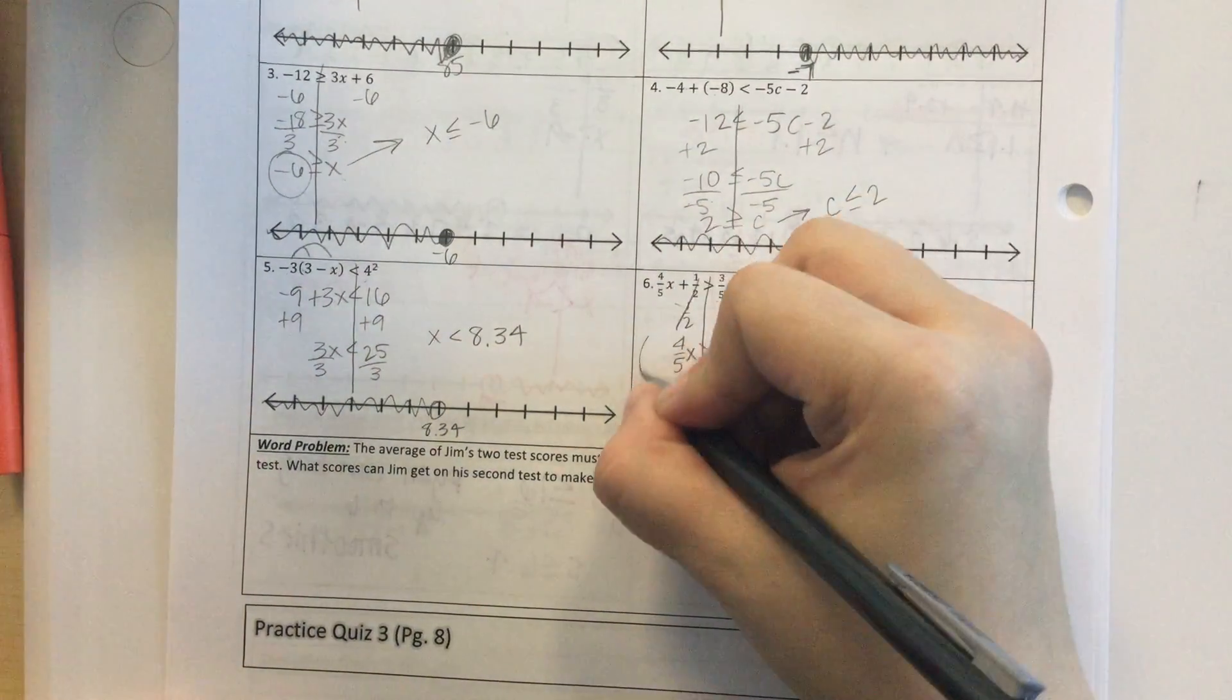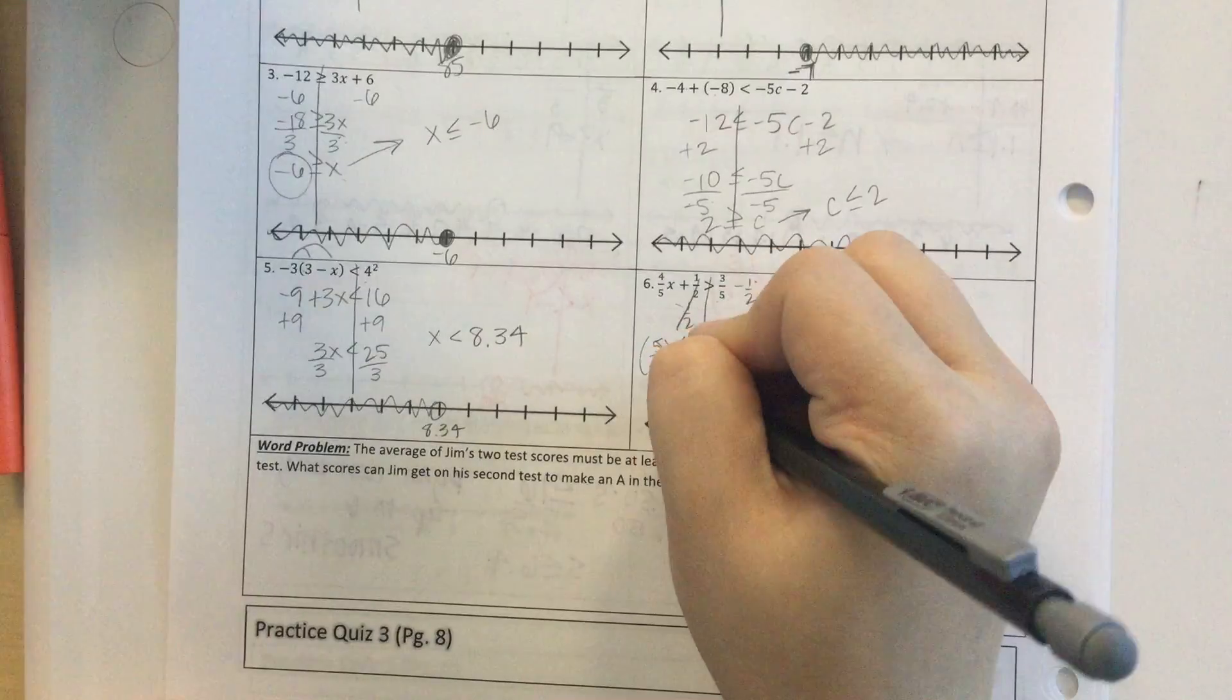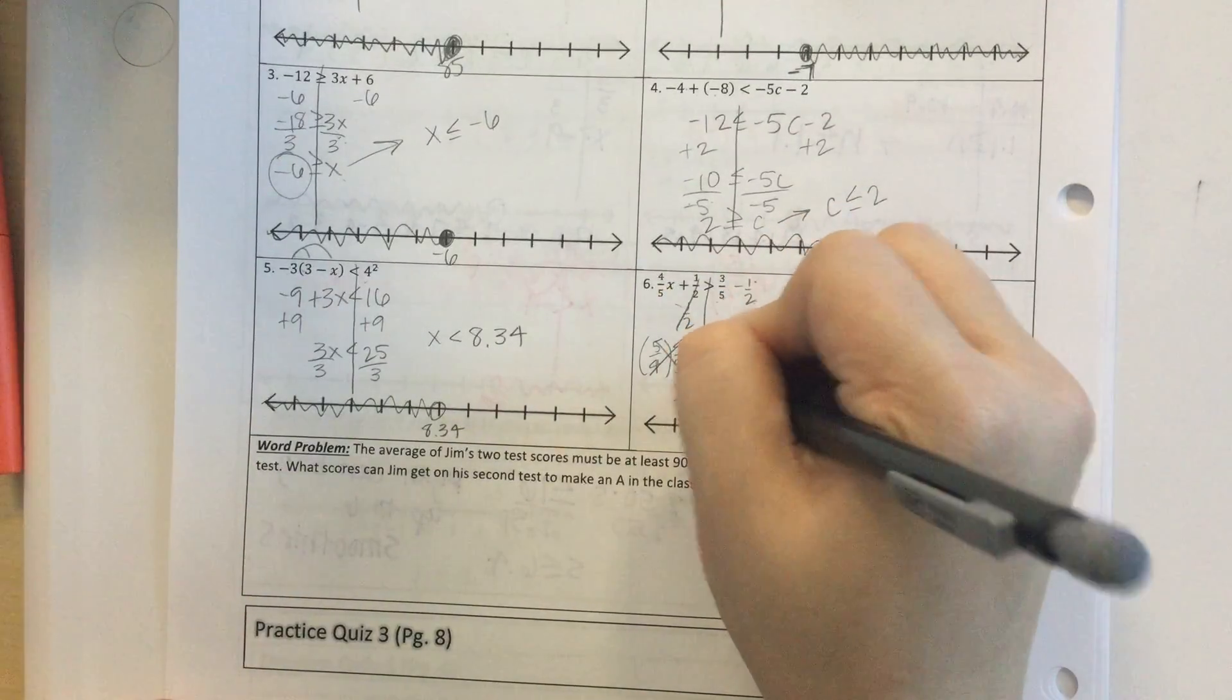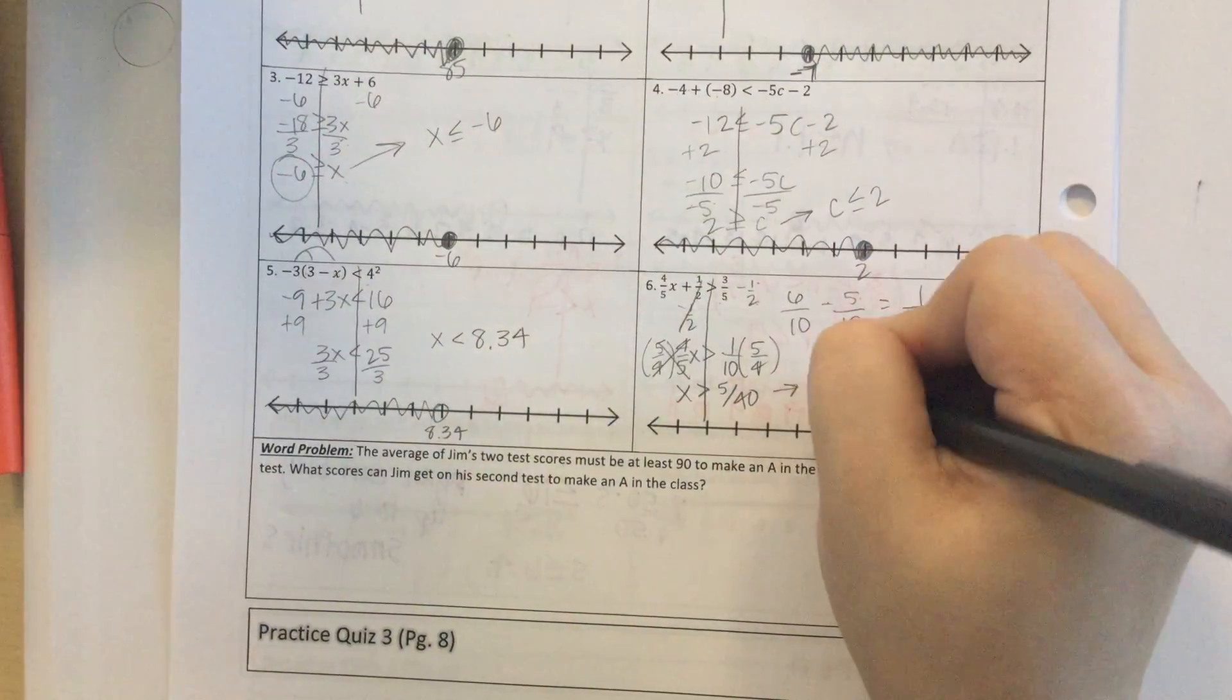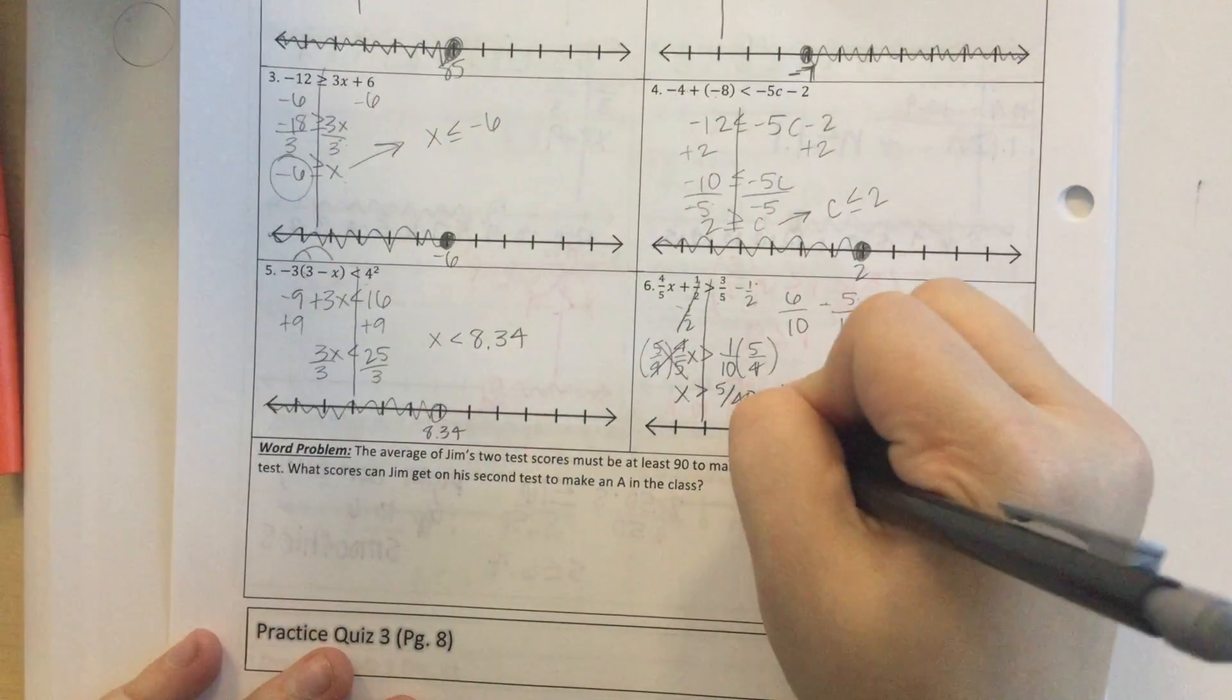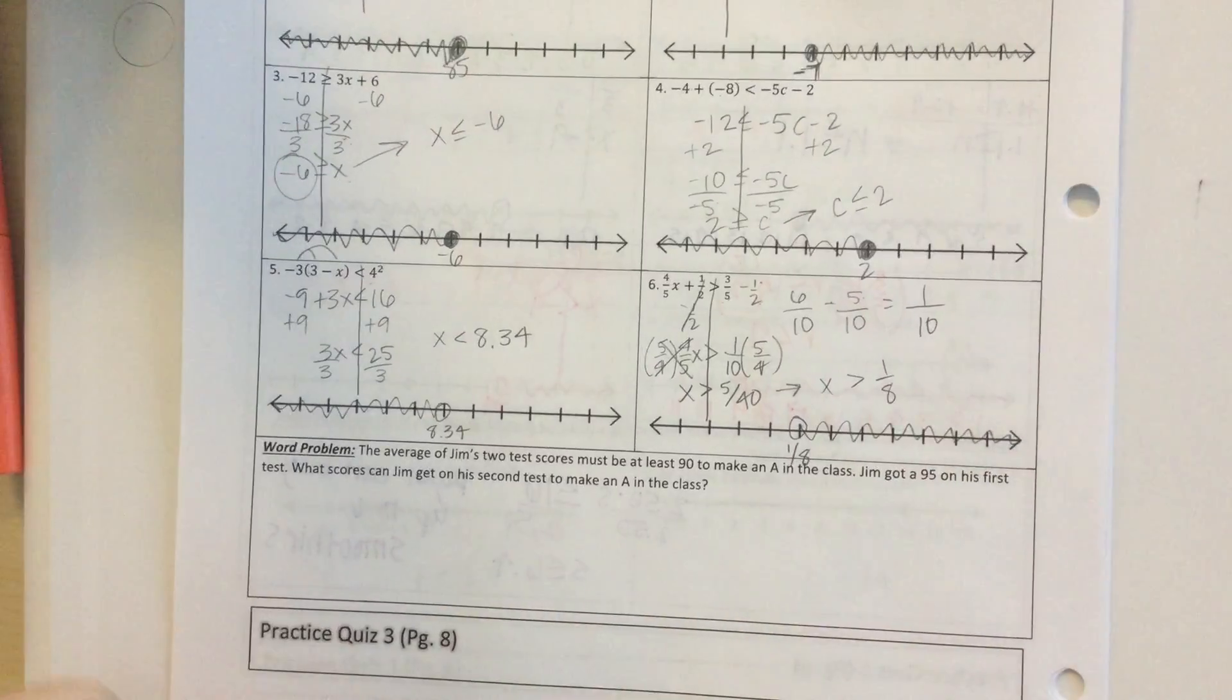Okay. Then to get rid of this guy, I multiply by the reciprocal. Gone. x is greater than 1 times 5 is 5. 10 times 4 is 40. I can simplify that. 5 does go into 40. It goes into it 8 times. So 1 eighth is what I have there. So I'm just going to put 1 eighth. Open circle. Going to the right. And that's it.